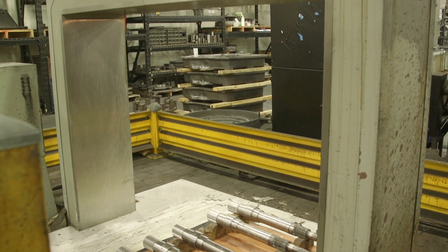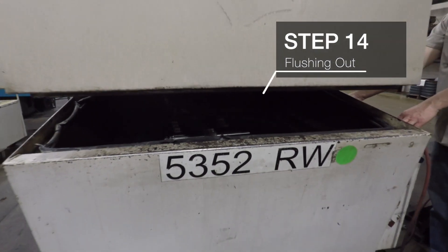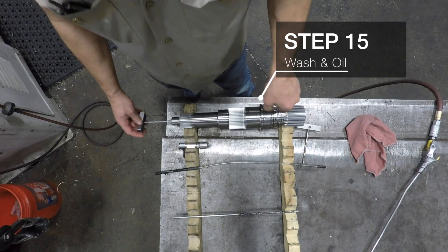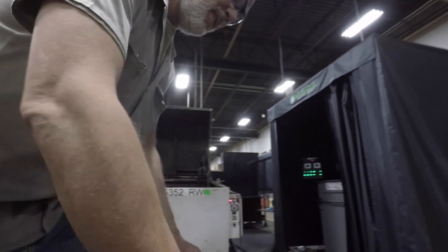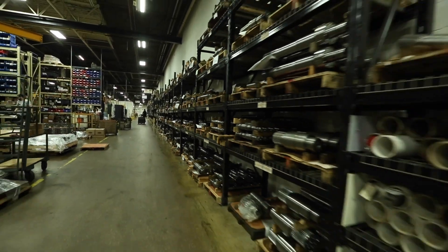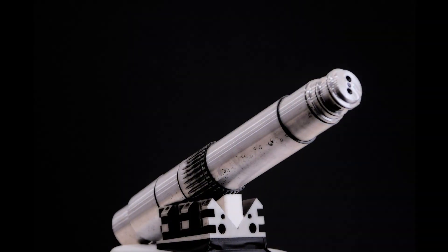The final steps in the manufacturing process involve flushing out all debris and prepping it for stock by washing and oiling the shaft to prevent rust. The end result is a critical transmission component that helps change the way the world works, something TwinDisc has proudly and successfully been doing for 100 years.